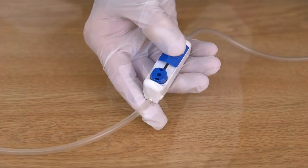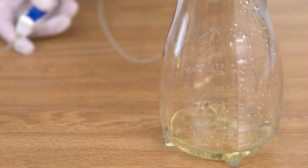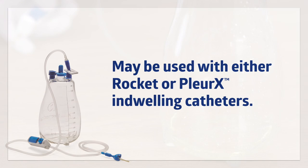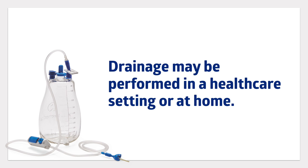When a catheter has been placed in the patient's chest or abdomen by their doctor, the ROCKET IPC Pleural Drainage System may be used with either ROCKET or Plurex indwelling catheters. Drainage may be performed in a healthcare setting or at home, whichever is best suited for the patient's care and convenience.